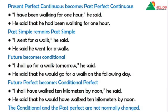Present perfect continuous becomes past perfect continuous. Present perfect continuous denotes an activity started in the past but continuing up till now. Example: 'I have been walking for one hour,' he said. It started in the past and is still relevant. When converted into past perfect continuous, a past activity of the past action is being denoted: He said that he had been walking for one hour.